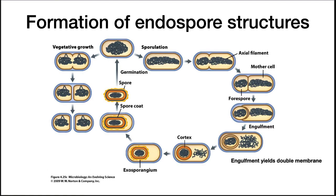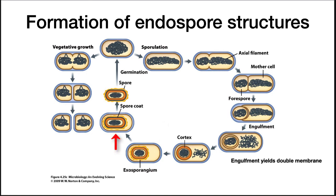Sporulation is a stepwise process that begins with an asymmetric division, followed by engulfment where the parent cell engulfs the developing spore. Then a cortex is laid down, and the spore coat after that, and the exosporangium after that. Finally, the spore is released when the parent cell lyses.